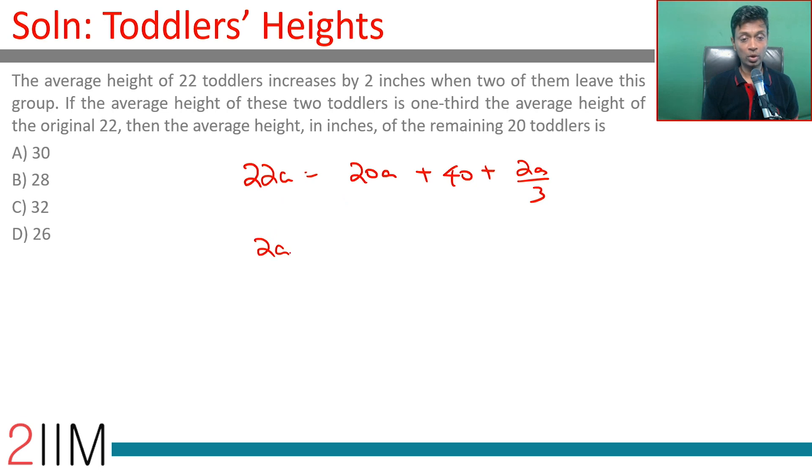So 2a minus 2a by 3 is 40. 4a by 3 is 40. A is 30, a is 30 inches. We are looking at a plus 2, which is 32 inches.